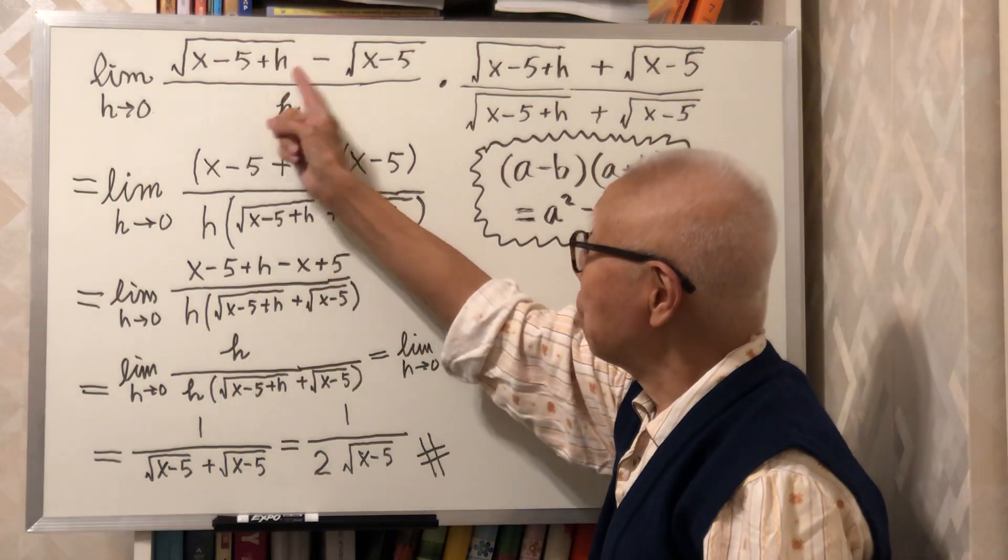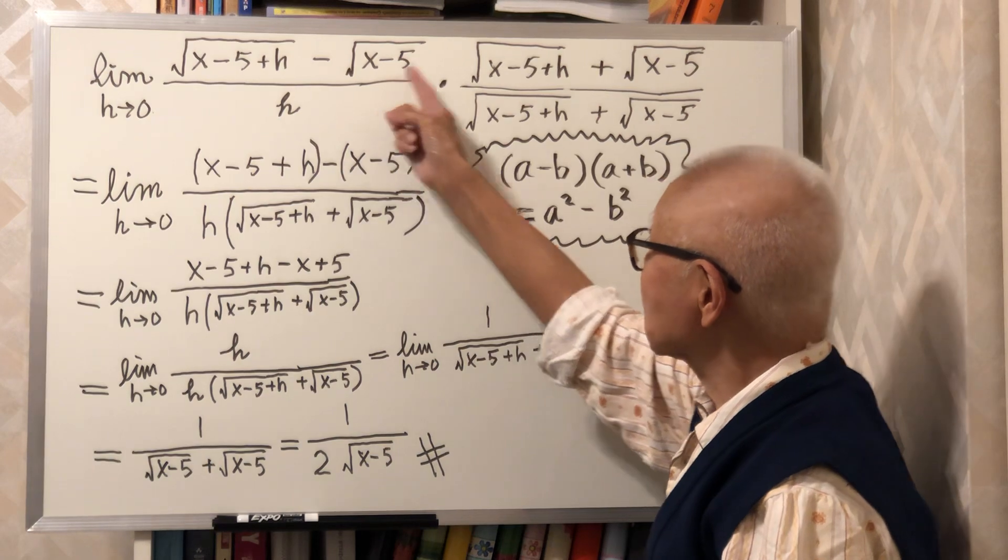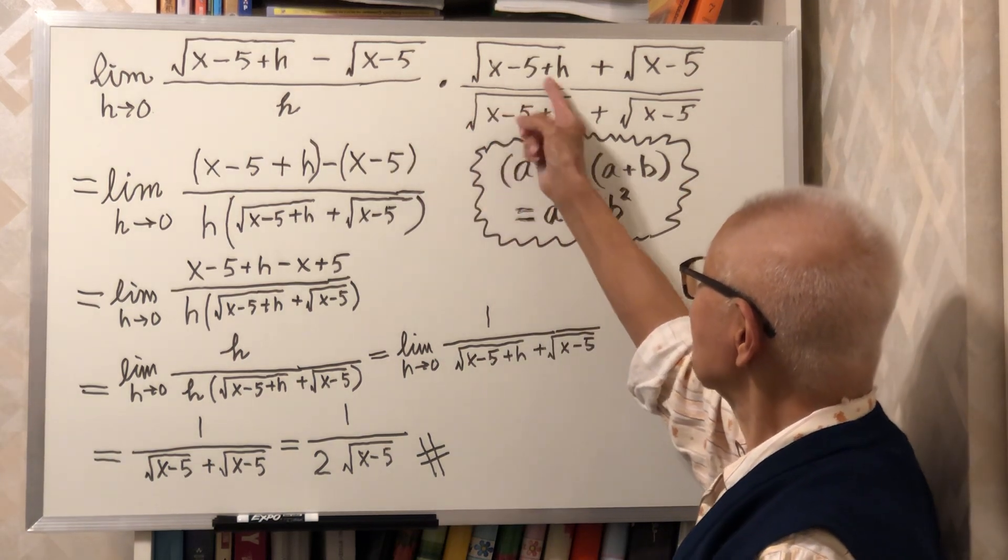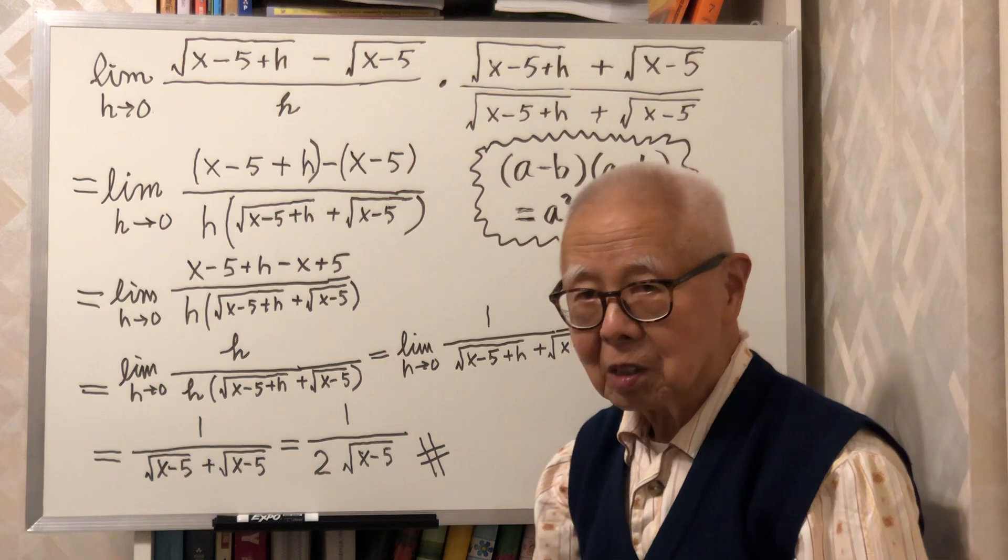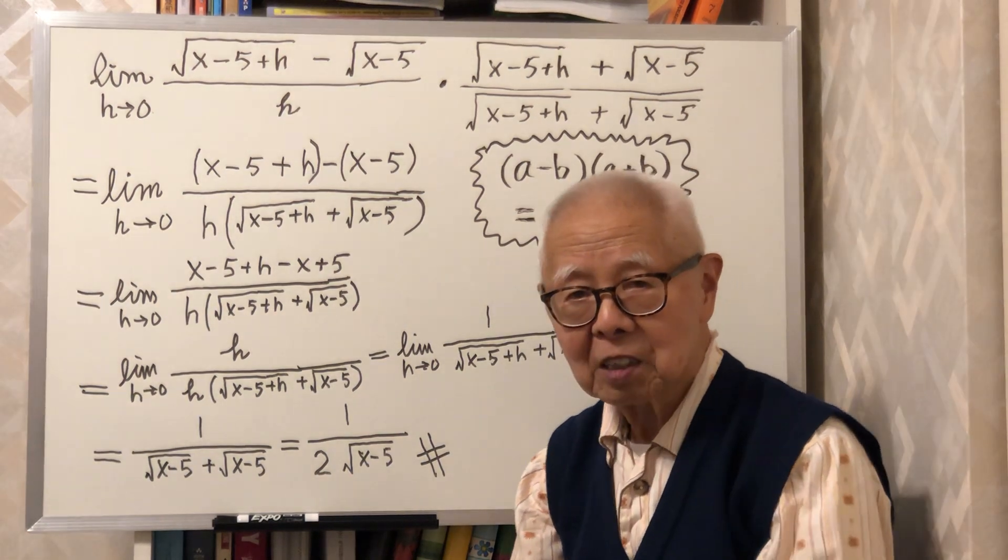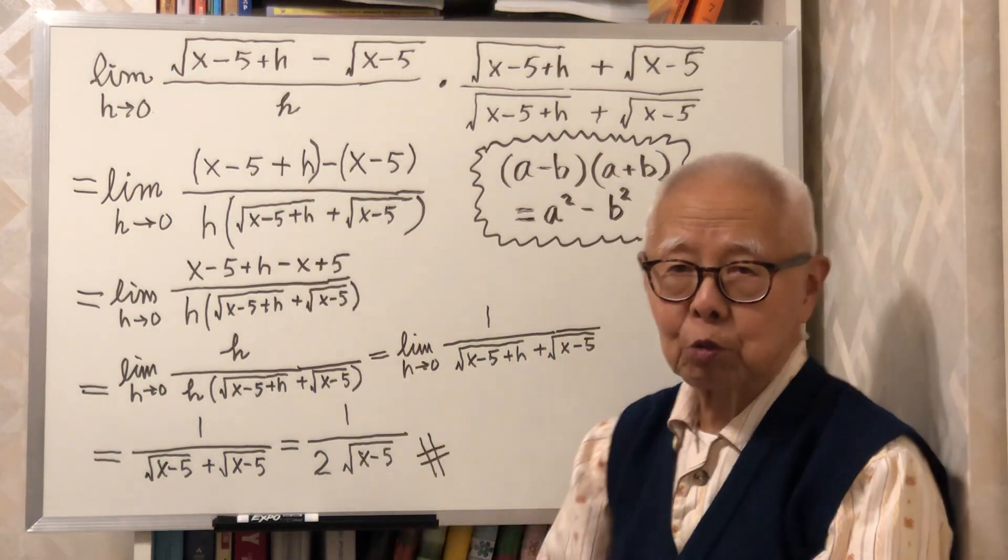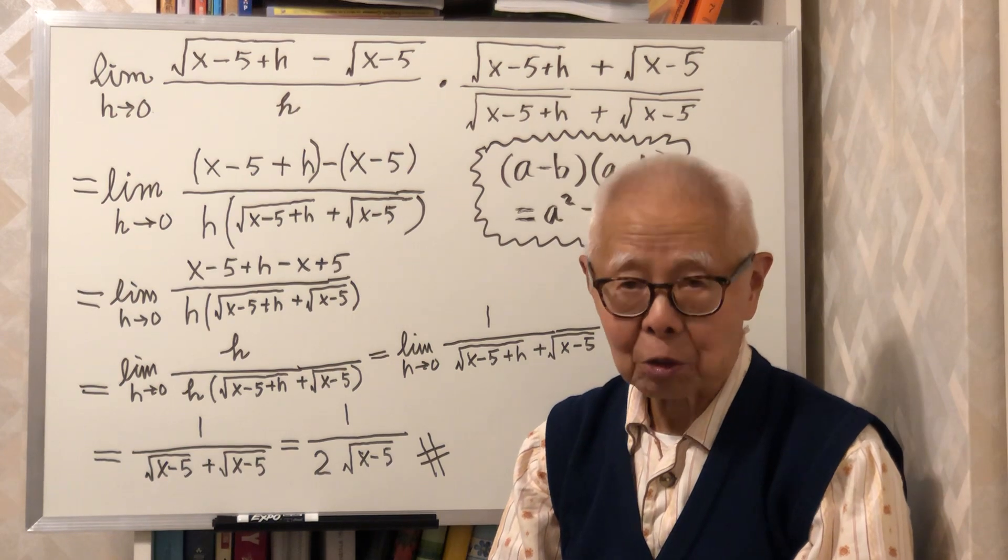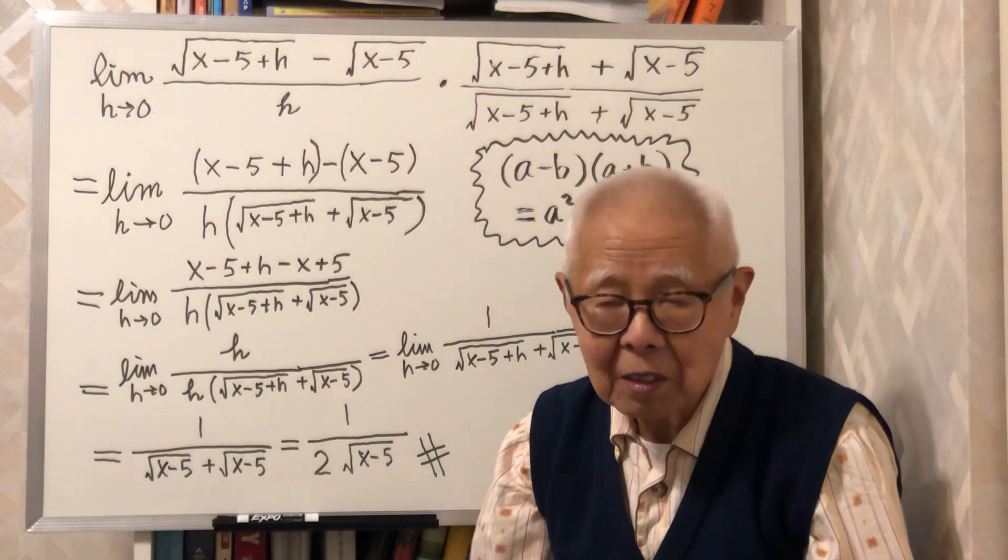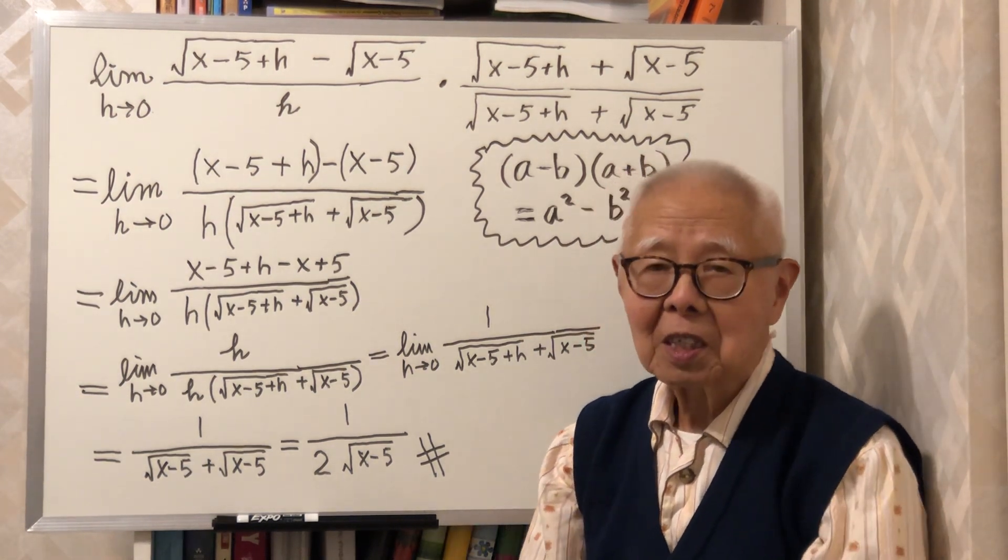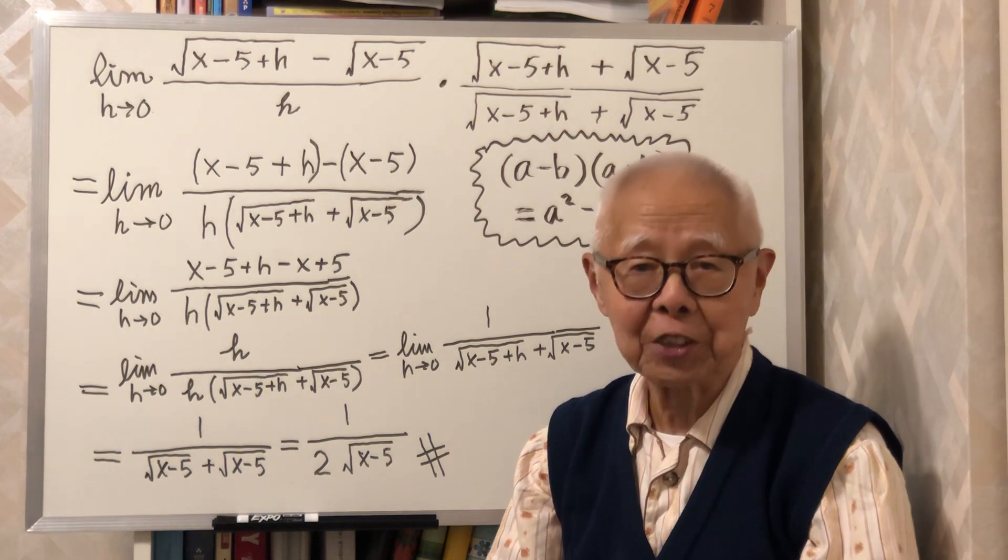(a - b) times (a + b). In this way, the two square roots will be cancelled or will disappear, and then everything can be simplified. So that is the idea.